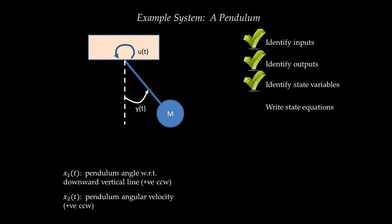Step four is to write the state equations — an equation for x1-dot and an equation for x2-dot. The equation for x1-dot is easy: the rate of change of pendulum angle with respect to time is just angular velocity, so x1-dot equals x2. The second state equation is for x2-dot, the angular acceleration. To write it, I need the summation of moments acting on this pendulum using the rotational law of motion: summation of moments equals angular acceleration multiplied by moment of inertia.